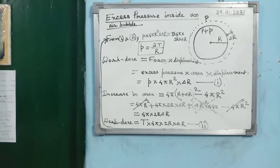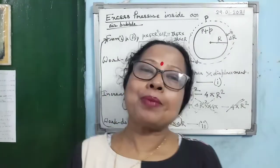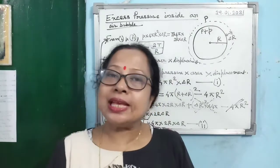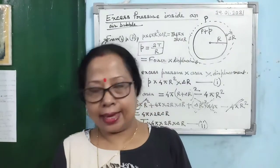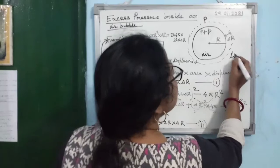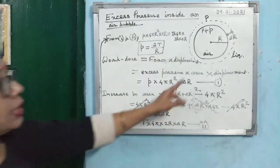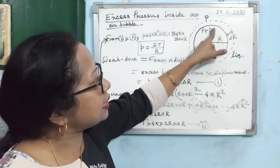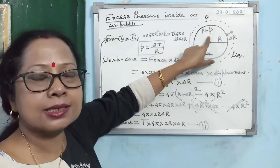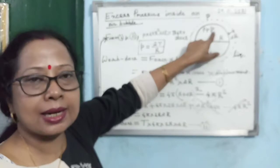Now we find the excess pressure inside an air bubble. A liquid drop and an air bubble are identical but with one difference: for a liquid drop, inside is liquid and outside is air; for an air bubble, inside is air and outside is liquid. The physics remains the same — the concave side has excess pressure p, so pressure inside the air bubble is P plus small p, and outside it is P.